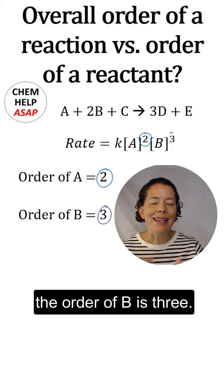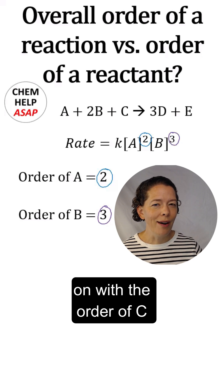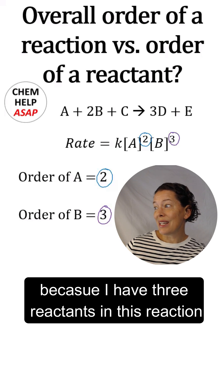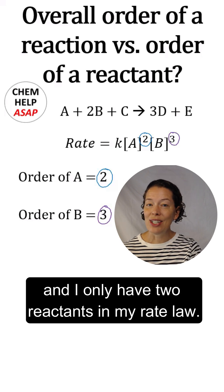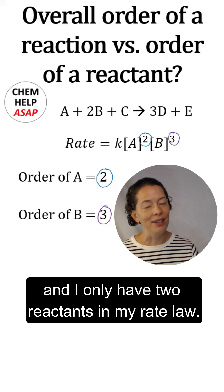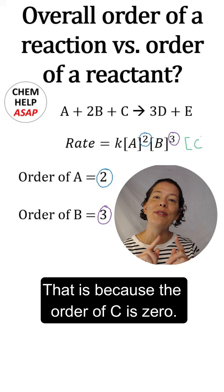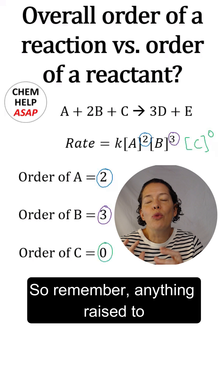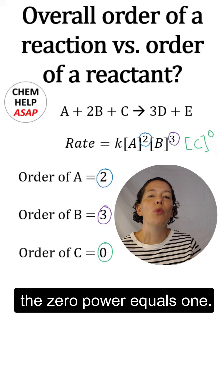The order of B is 3. So you're probably wondering what's going on with the order of C, because I have 3 reactants in this reaction and I only have 2 reactants in my rate law. That is because the order of C is 0.